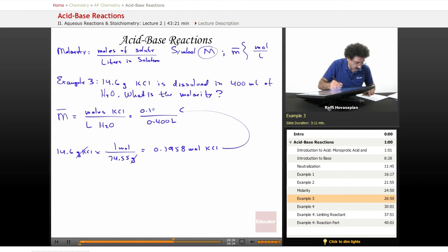0.1958 mole of KCl dissolved in 0.4 liters. I do the division and end up with 0.49 moles per liter, or 0.49 molar. We often say molar solution.